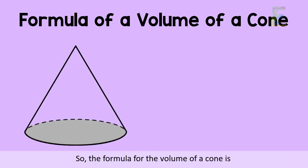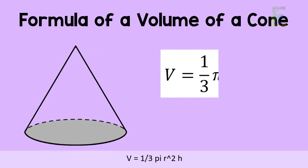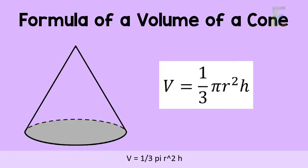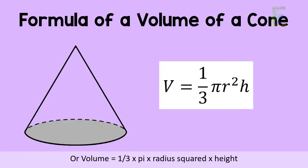The formula of a volume of a cone is v is equal to one-third pi r-squared h, or volume is equal to one-third times pi times radius squared times height.